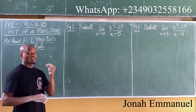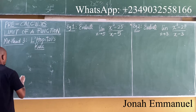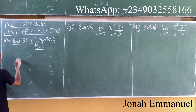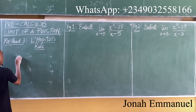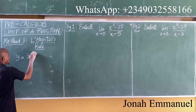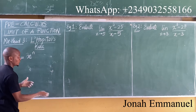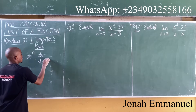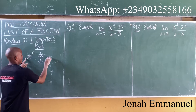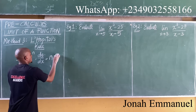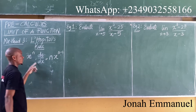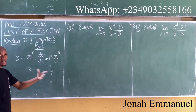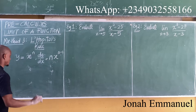Just to refresh your memory, if I'm given the term y equals x to the power n, using the general method, dy/dx is equal to n times x to the power n minus 1. The concept is: multiply by the power and subtract 1 from the power.